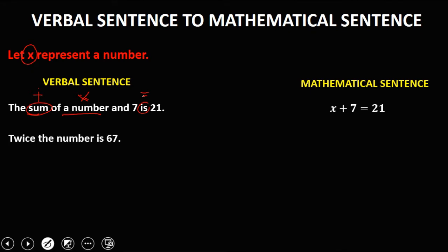For the next given: 'Twice the number is 67.' Again, 'the number' is x, 'twice' means 2, and 'is' means equal. So in mathematical sentence: 2x = 67.